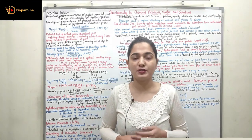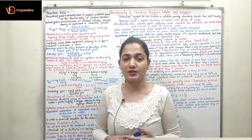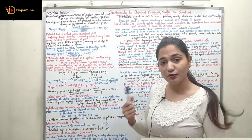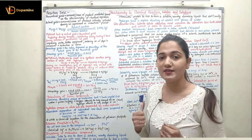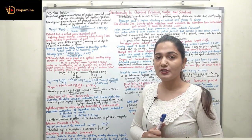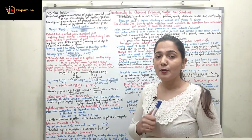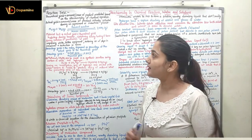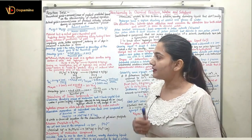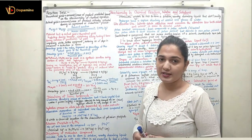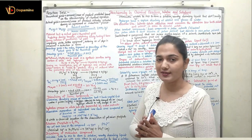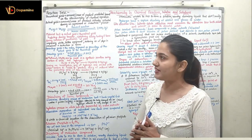We are going to start with the chapter Stoichiometry in chemical reactions, and first of all we are going to understand what is the reaction yield. To understand the various kinds of yield, we must understand theoretical yield, actual yield, and the percentage yield. These three types of yield we are going to understand.